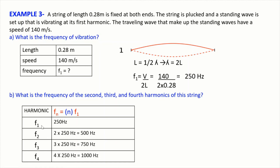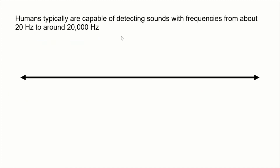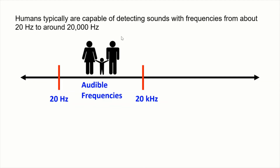We did three examples applying what we learned today — we can now incorporate tension and density in our study of sound waves. Humans are typically capable of detecting sounds with frequencies from above 20 Hz to around 20,000 Hz. This range is called audible frequencies.